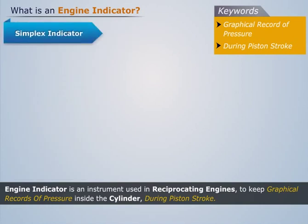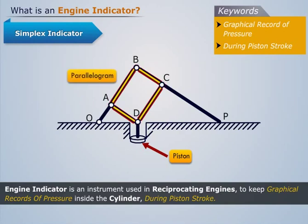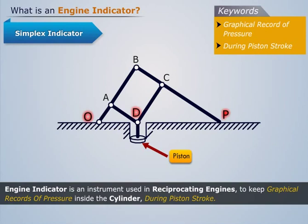Simplex indicator. Its line diagram resembles the pantograph copying mechanism. It consists of a fixed pivot O, attached to the body of the indicator. The links AB, BC, CD and DA form a parallelogram and are pin joined. The link BC is extended to point P, such that O, D and P lie in a straight line. The piston rod of the indicator, attached at point D, moves along the line of stroke of the piston.